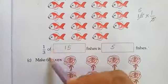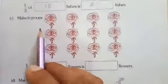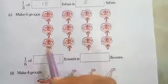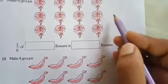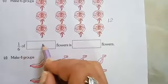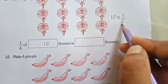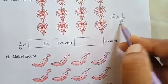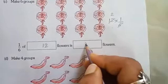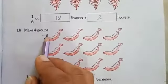Next question: make 6 groups. Here you can see rose flowers. How many rose flowers are there? 1, 2, 3, 4, 5, 6, 7, 8, 9, 10, 11, 12 — total 12 rose flowers. You have to find out 1 sixth of 12 flowers. In the 6 times table, 6 twos are 12, so 1 sixth of 12 flowers is 2 flowers.